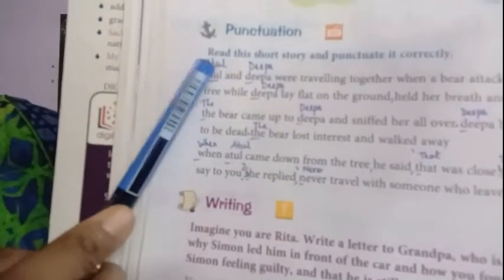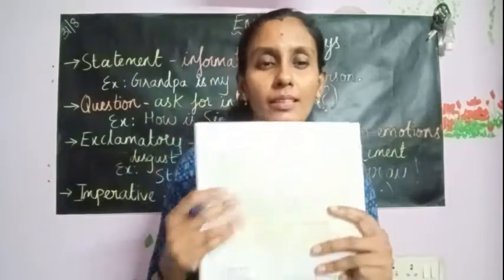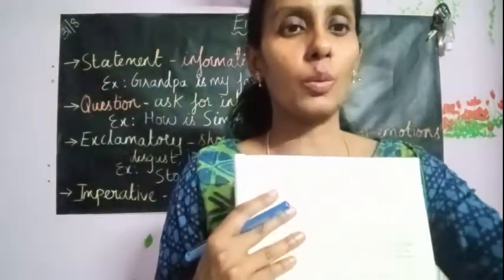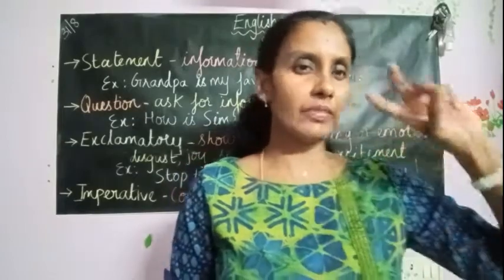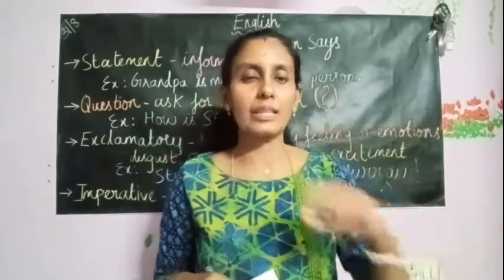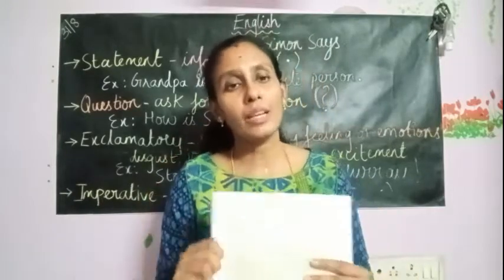That is the story they have given you to punctuate. The names Atul and Deepa are written in small letters and you are supposed to capitalize them. I will take a photo and send it to you on the WhatsApp group showing exactly where full stops should be placed. The next part of the exercise is letter writing. This kind of letter is called an informal letter. In letter writing we have two kinds: a formal letter and an informal letter. You will be learning only an informal letter for now — I think in grade 5 you will learn the formal letter.